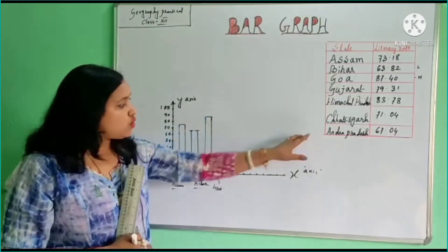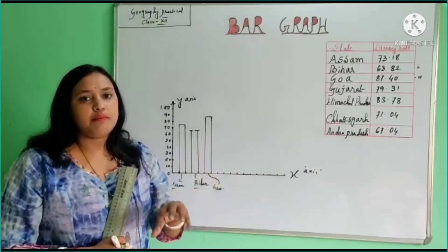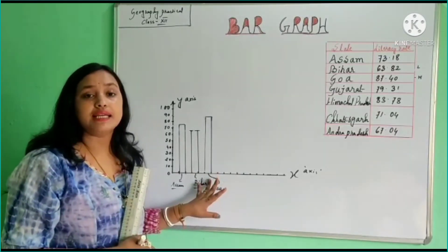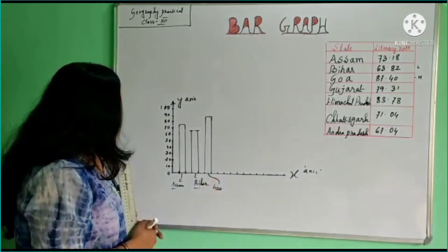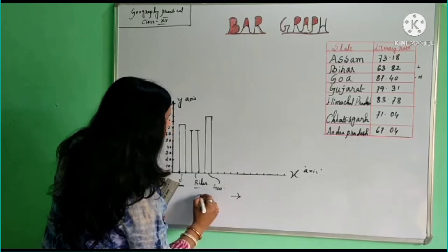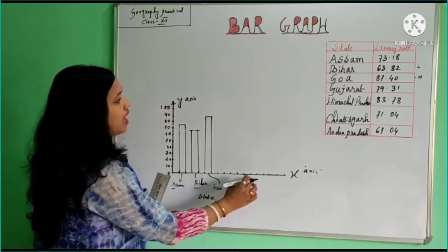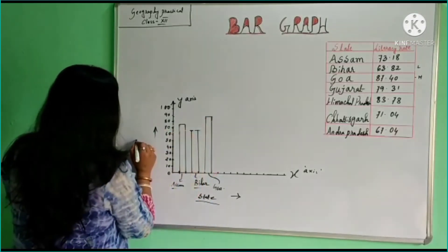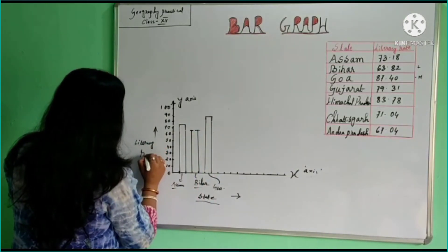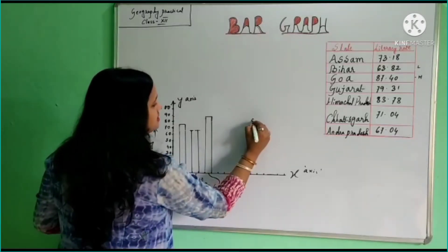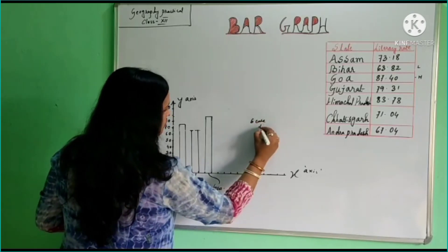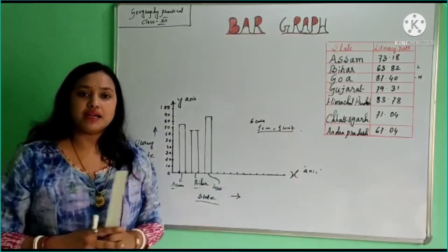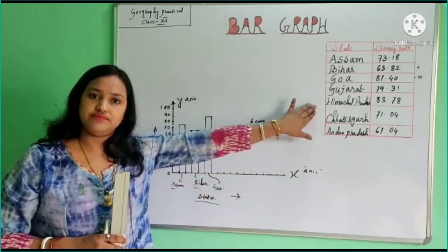In this manner you can draw bars for Gujarat, Himachal Pradesh, Chhattisgarh, and Andhra Pradesh — the process is the same. Remember, the scale for horizontal is uniform width and gap is also uniform. Write the state names on the x-axis and mention the literacy rate on the y-axis. The scale is one centimeter represents one unit. This is the simple bar graph we can draw using this data.